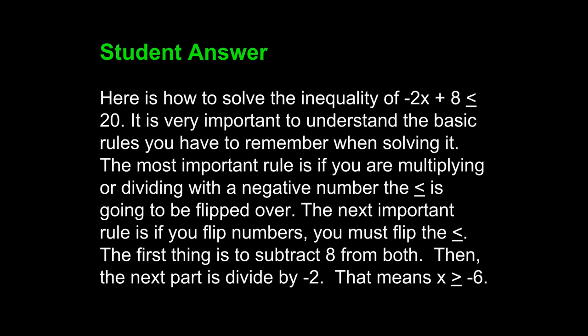Here is a sample student answer: Here is how to solve the inequality of negative 2x plus 8 is less than or equal to 20. It is very important to understand the basic rules you have to remember when solving it. The most important rule is if you are multiplying or dividing with a negative number, the less than or equal to sign is going to be flipped over. The next important rule is if you flip numbers, you must flip the less than or equal to sign. The first thing is to subtract 8 from both sides, then divide by 2. That means x is greater than or equal to negative 6.